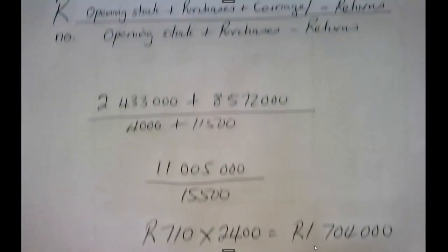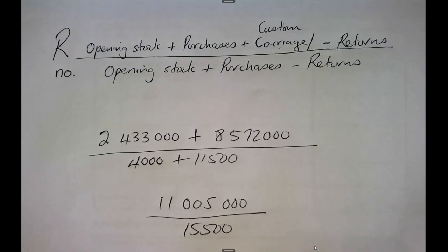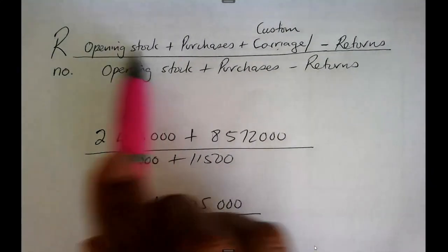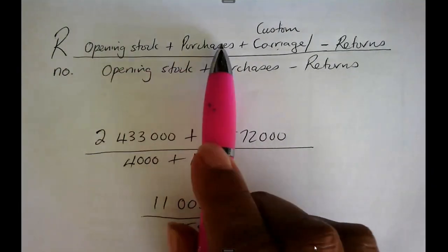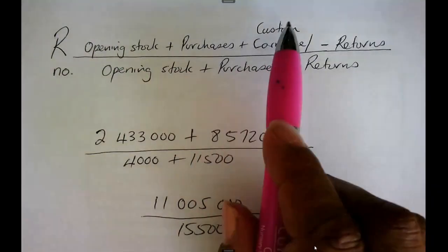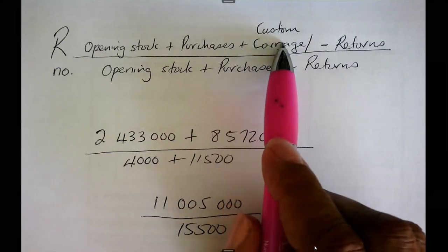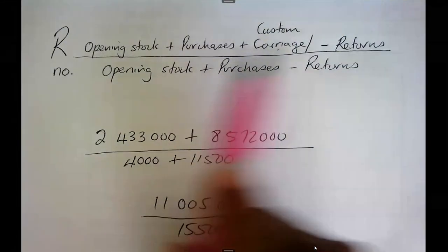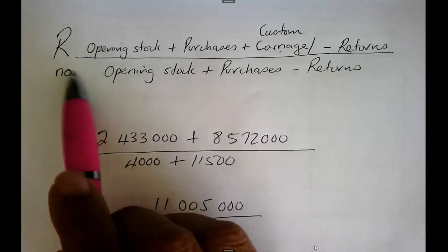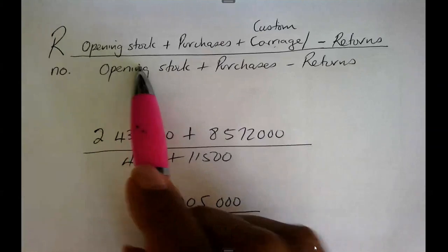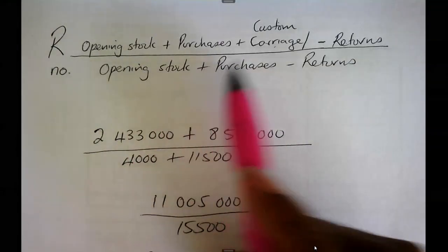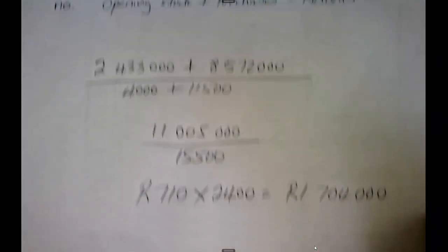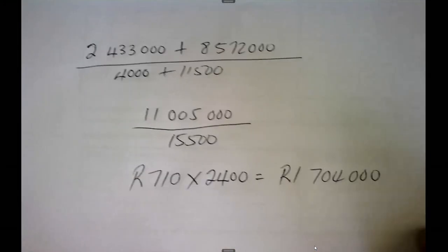That is how you work out weighted average. Please remember this formula: opening stock RAND plus purchases plus carriage or customs minus returns, divided by number of units of opening stock plus purchases minus returns. That gives you weighted average per unit, which you then multiply by closing stock units.